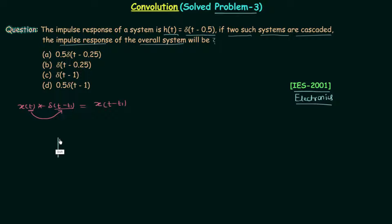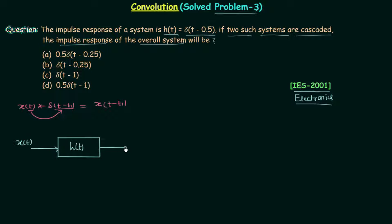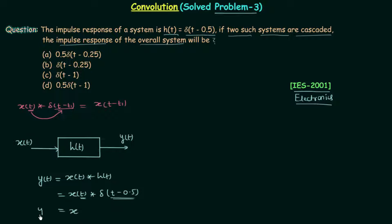We have one LTI system whose impulse response h(t) is equal to δ(t - 0.5). Let's say the input is x(t) and the output is y(t). We can calculate y(t) by convolving x(t) with h(t). We know h(t) = δ(t - 0.5), so from the convolution property, in place of t we put t minus 0.5. Therefore y(t) = x(t - 0.5).